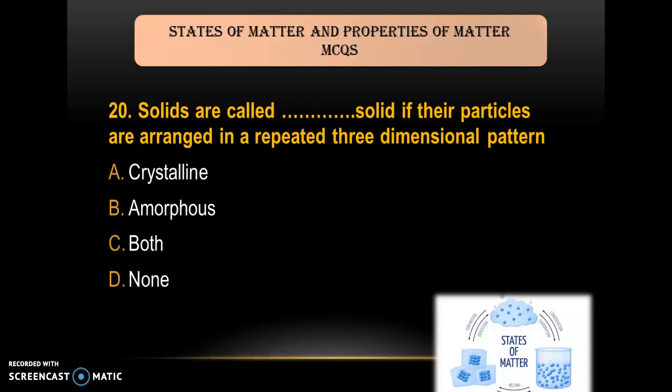Question 20: Solids are called ___ if their particles are arranged in a repeated three-dimensional pattern — A) crystalline; B) amorphous; C) both; D) none. The answer is A — crystalline, because in crystalline solids, particles are arranged in a repeating three-dimensional pattern.